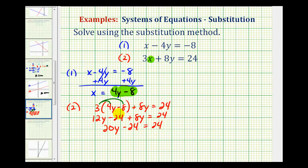Now we have a basic two-step equation, so we'll add twenty-four to both sides. Here we have twenty y equals forty-eight, and now we'll divide both sides by twenty.